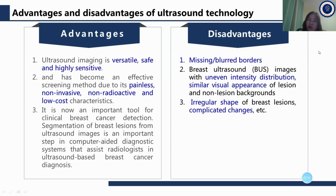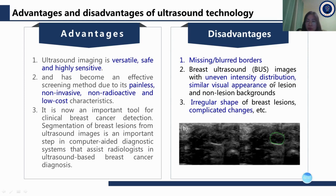Many disadvantages also exist. First, ultrasound images have misleading or blurred borders. Second, breast ultrasound BUS images have uneven intensity distribution, similar visual appearance of lesion and non-lesion backgrounds, and the irregular shape of breast lesions.